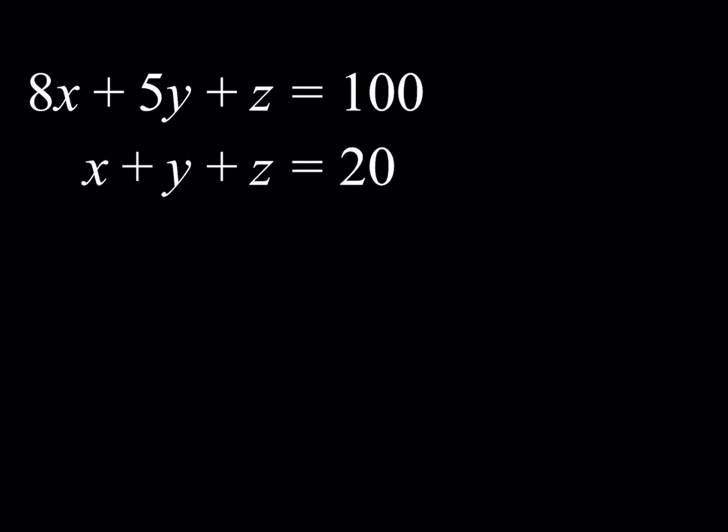So we have this system: 8x plus 5y plus z equals 100, x plus y plus z equals 20, and we're looking for integer solutions. Notice that this is a Diophantine system, so there are two equations.